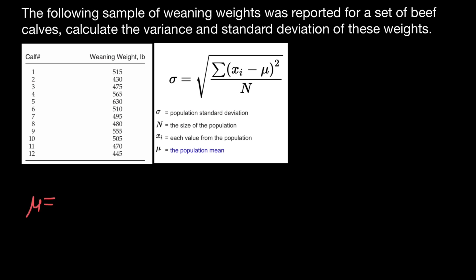So mu would equal the first animal weighing 515 pounds, plus the second animal weighing 430 pounds, third animal 475 pounds, next one 565 pounds, and so on. We have to add all these weights of all the animals and divide by the number of animals, which is 12. The mean of the population is going to be 506.25 pounds.